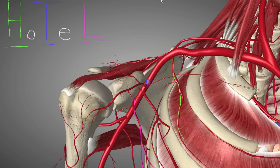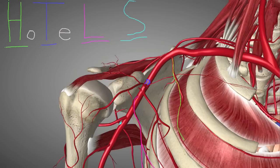In baby blue we have the Subscapular Artery. Of the six branches of the axillary artery, this is really the only one pointing straight posteriorly, so we can't really see it from this view — it's back here. We'll turn the camera in a bit so you can see that. S stands for Subscapular Artery — that's the S in HOTEL SPA.